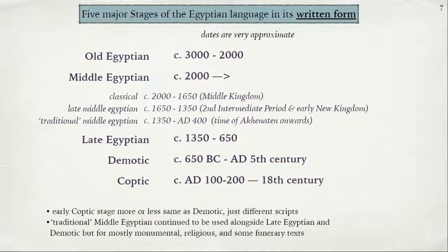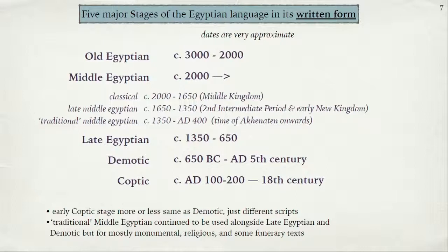Before I go to talk about more examples of writings and different genres and texts, let's review the different stages of the language. Don't confuse the stages with the different scripts — it's easy to confuse them because some scripts and stages have the same name. Egyptian was a language that lasted many, many millennia, so of course it changed significantly over that time in terms of vocabulary, phonology, morphology, and syntax. It's challenging to track the changes because of the lack of vowels, which has made it difficult for Egyptologists to figure out what's been going on.